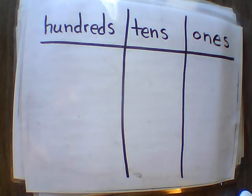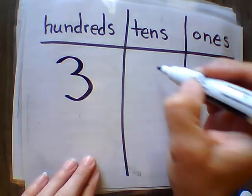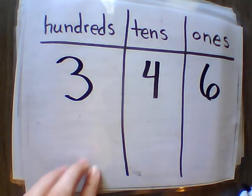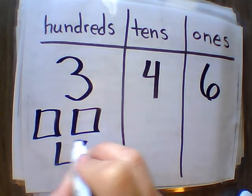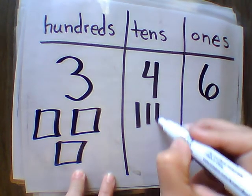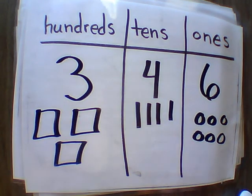So using the number 346, do your hundreds, tens, and ones. Go! So we have three hundreds, four tens, and six ones. So your board should look something similar to that.